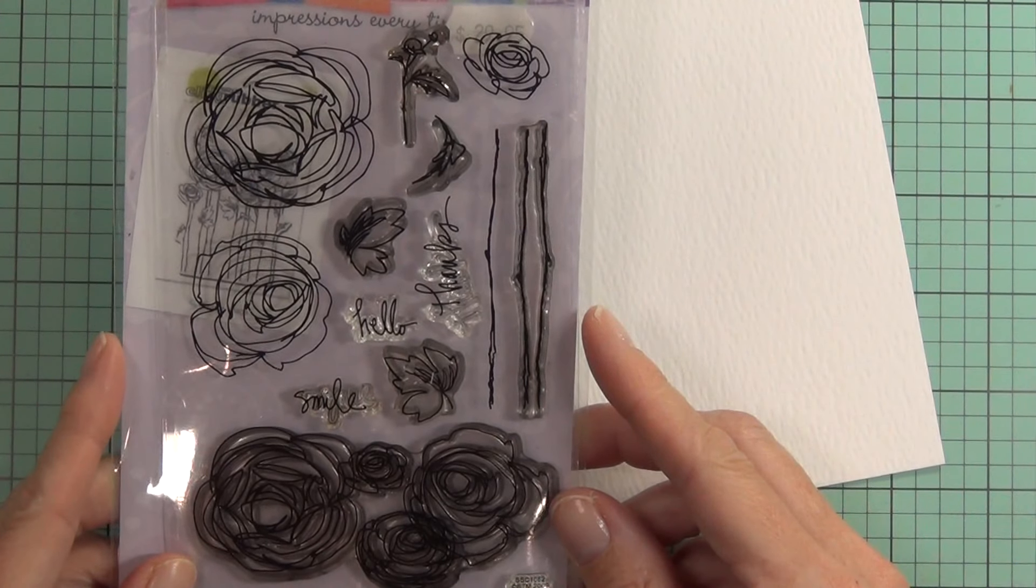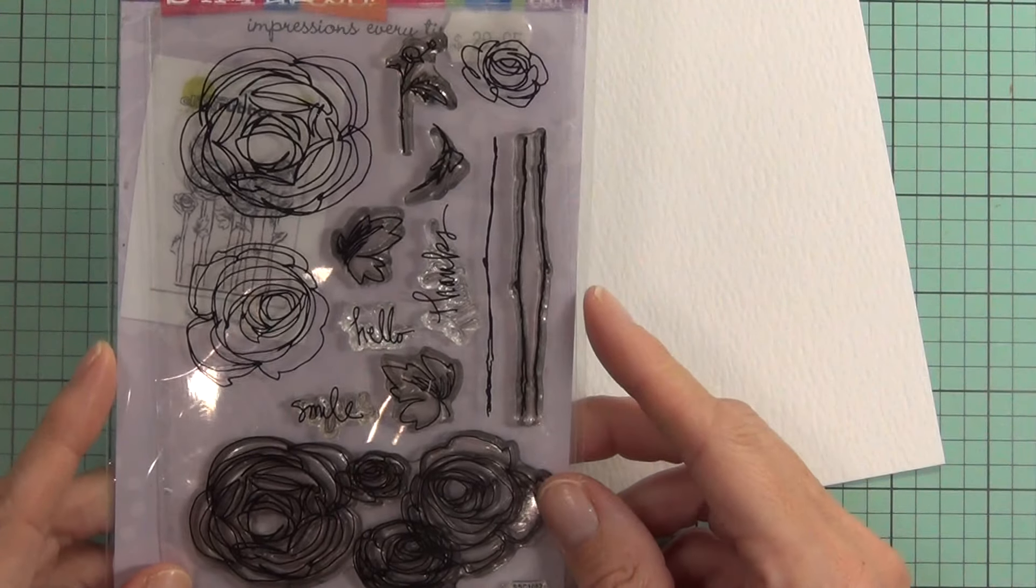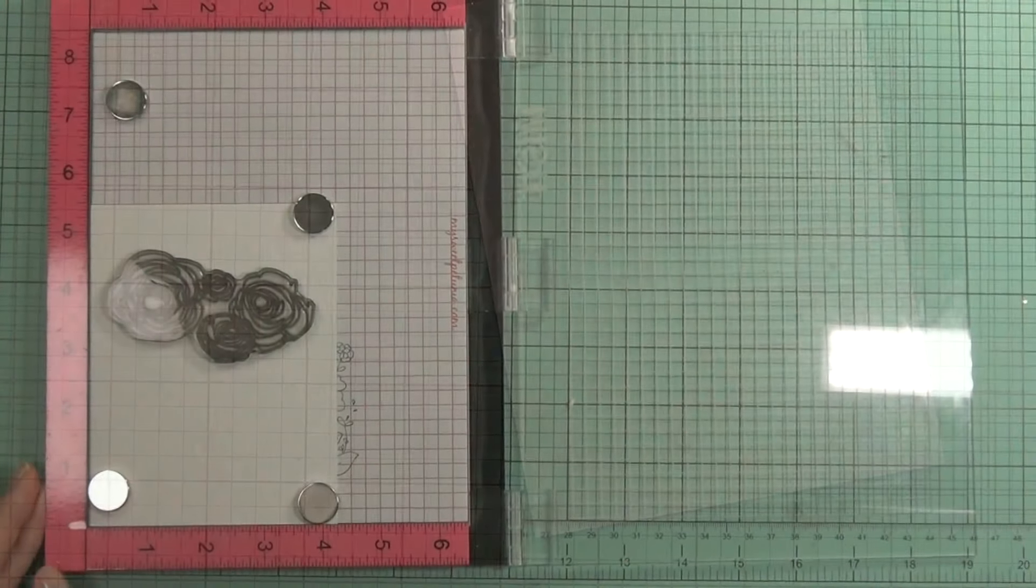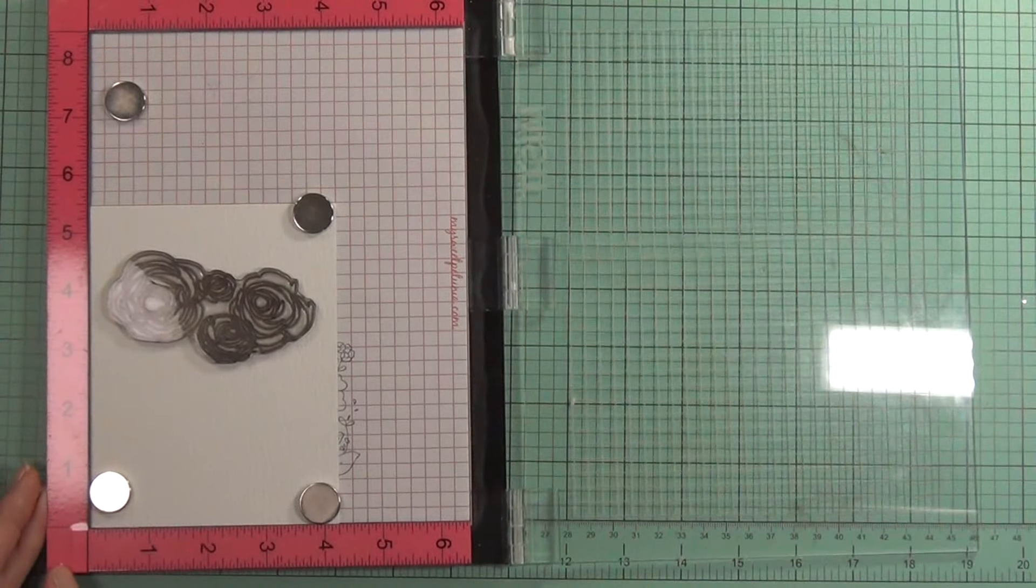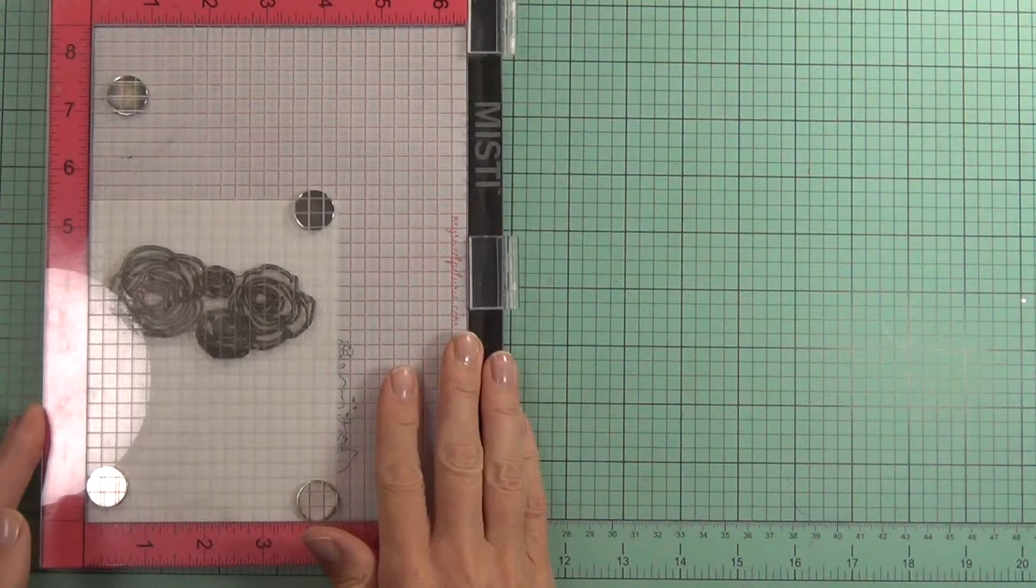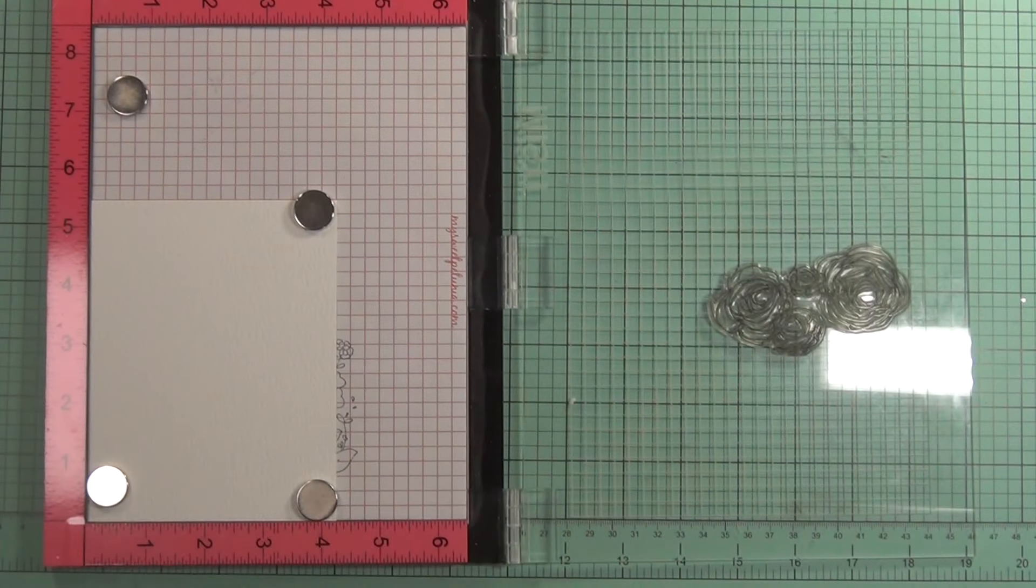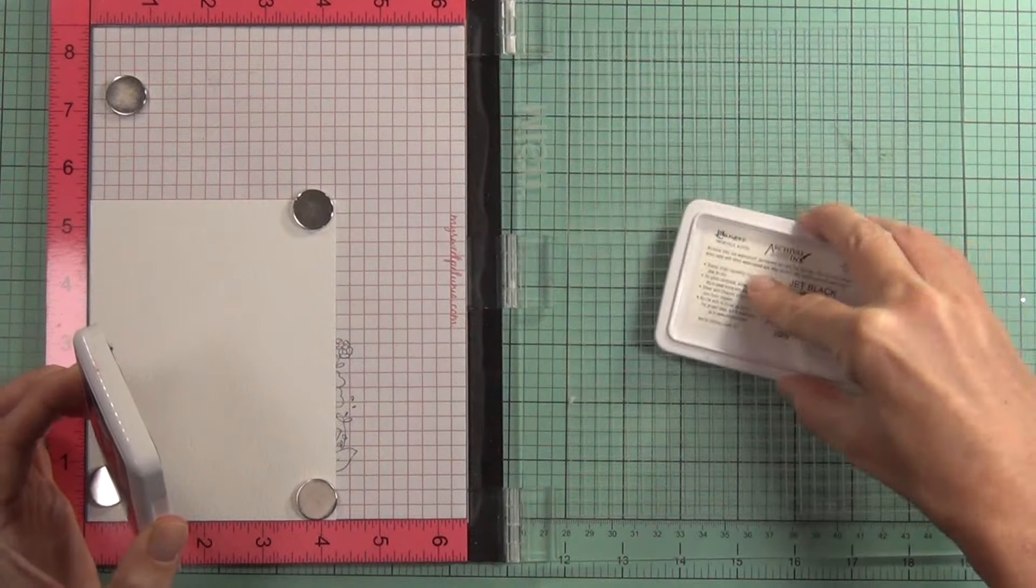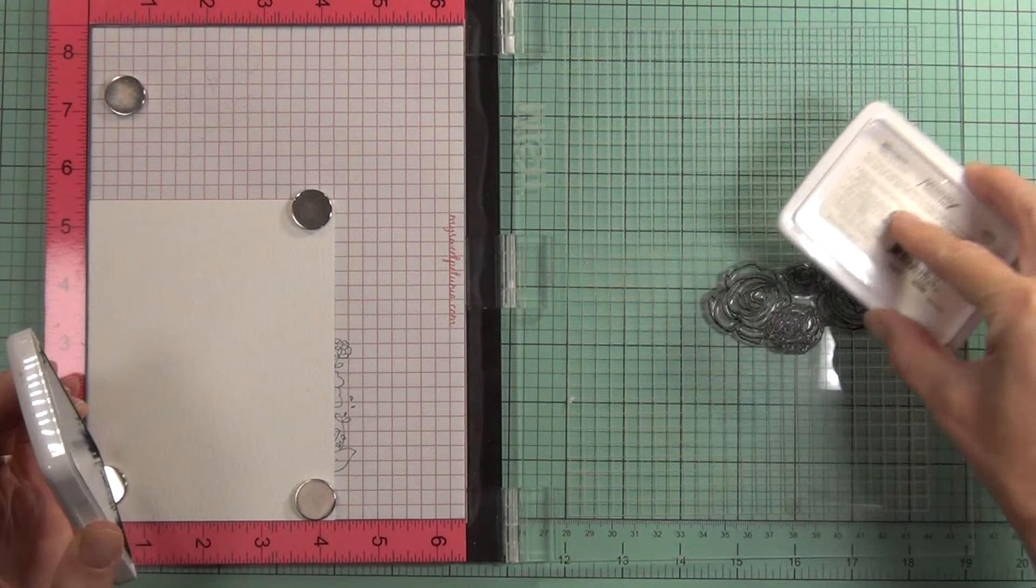This is a Stampendous stamp set called Ranunculus, and it's no longer available. I actually looked at the date on the back, and it's from 2009. But there is a similar stamp called Ranunculus Field, and I'll link that one at my blog instead.